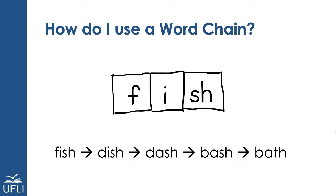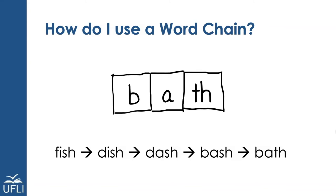If you're using a word chain, you can say: what would happen if I change the f to a d? What word would I have? You would ask your student to decode the word. Or you could say: change dish to dash, and your student would need to figure out how to encode the word. Change dash to bash, and change the sh to a th — what word would you have?